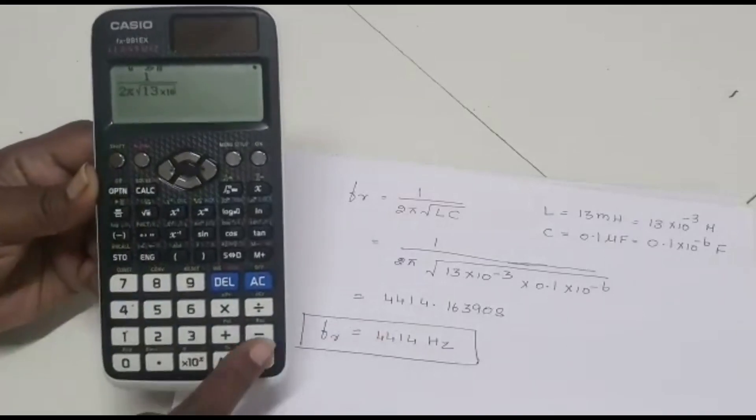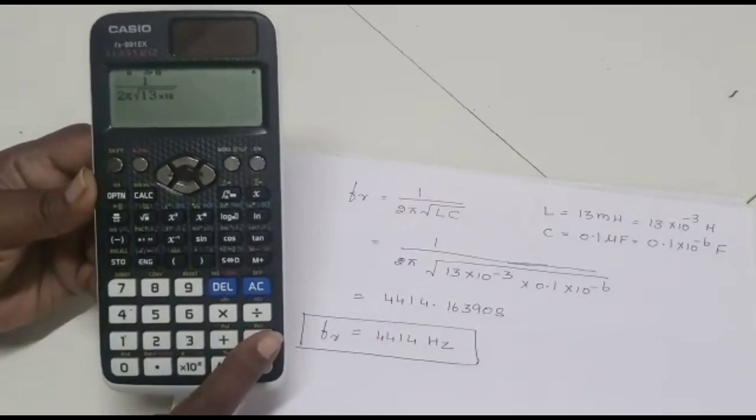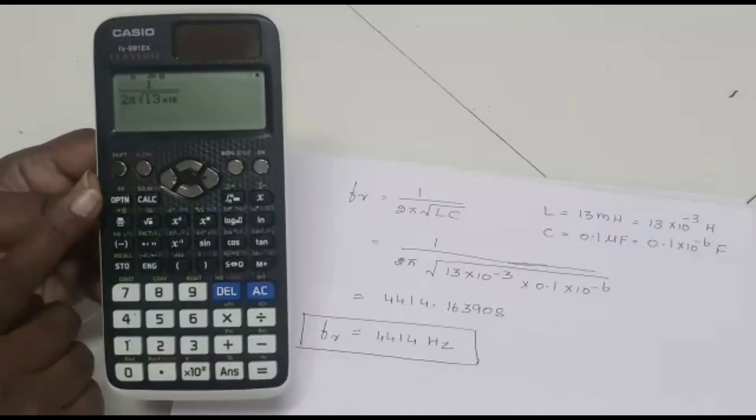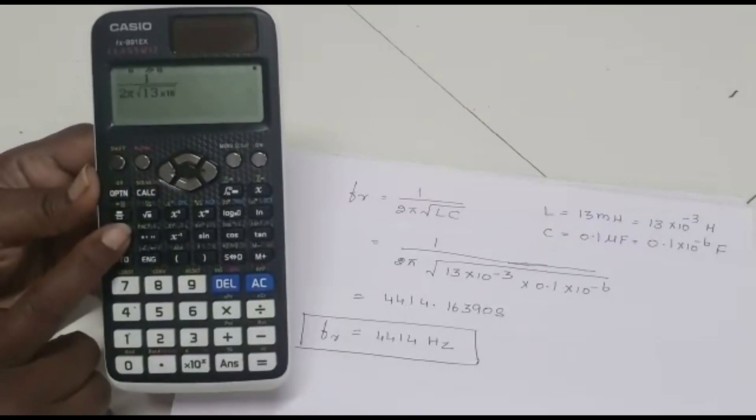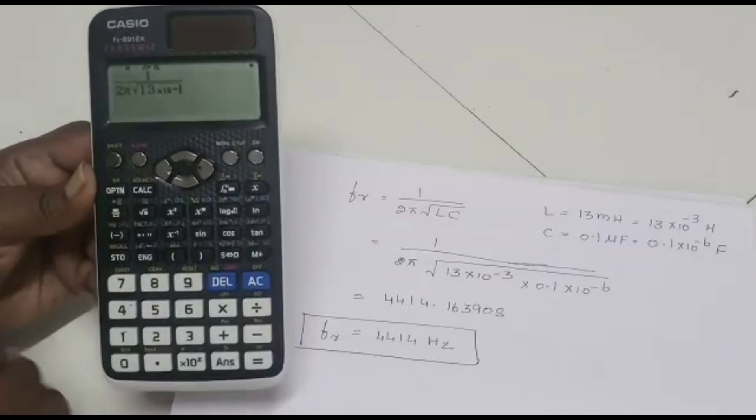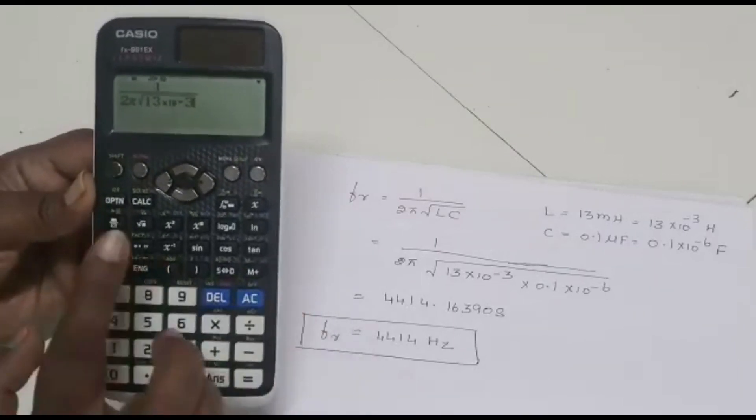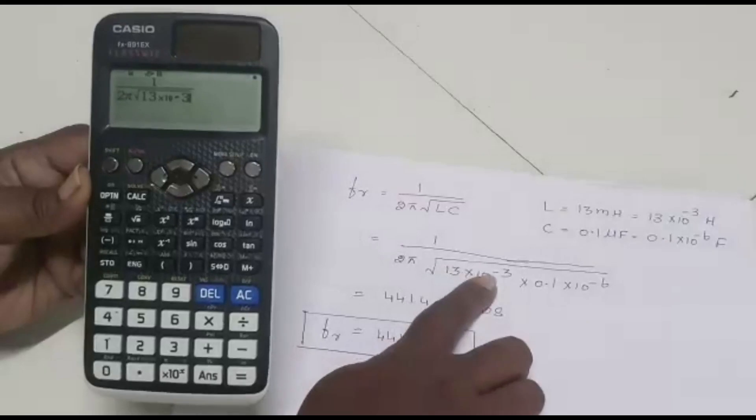Minus means do not press this symbol. It should not be used here for the power. See here 1, 2, 3. Third row, we are having this button. Press this minus for the calculation. And 3, 10 power minus 3. The first term is over.